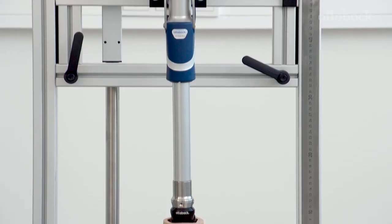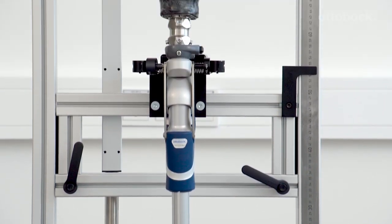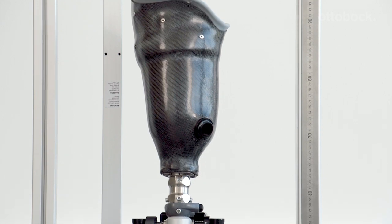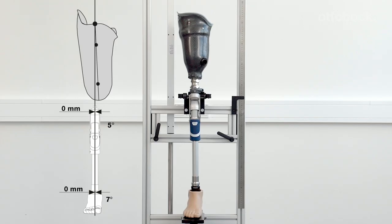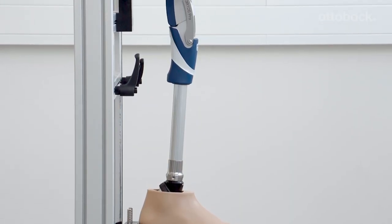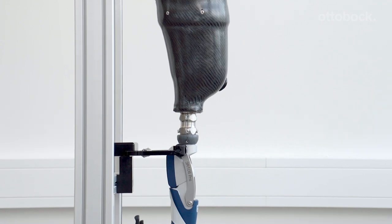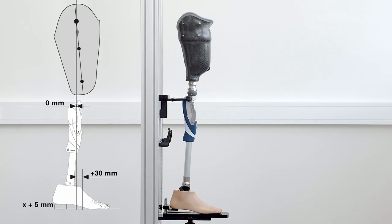The alignment and adjustments are easily completed in the following steps: Bench Alignment, Static Alignment, and Dynamic Trial Fitting. Please refer to the displayed table for the correct bench alignment values.